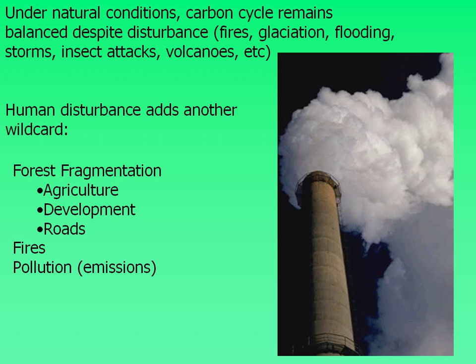Human disturbance adds a wild card to this function, with fragmentation caused by conversion of forest to agriculture, development, and road construction, which can permanently alter the environment. Human-induced fires and especially pollution or emissions from industrial and automobile sources — and even household trash — can affect the system.